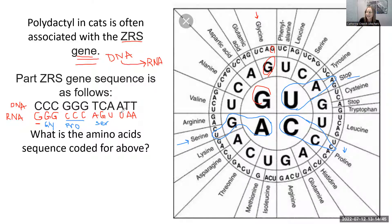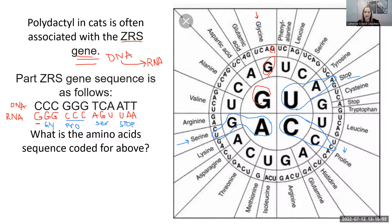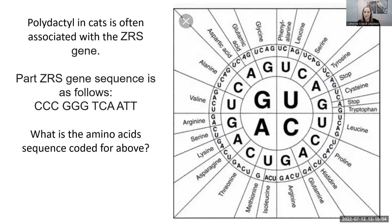So our last codon here codes for stop. By the way, there are three stop codons: UAA, UGA, and UAG. Let's practice it again with the other type of table.